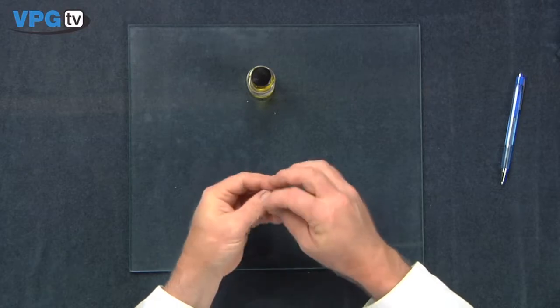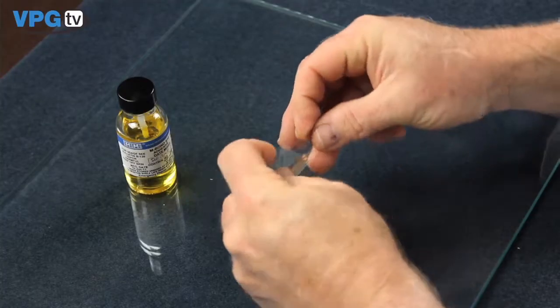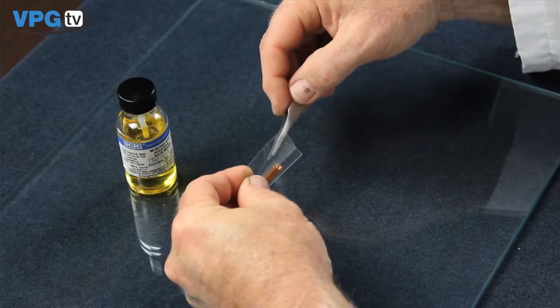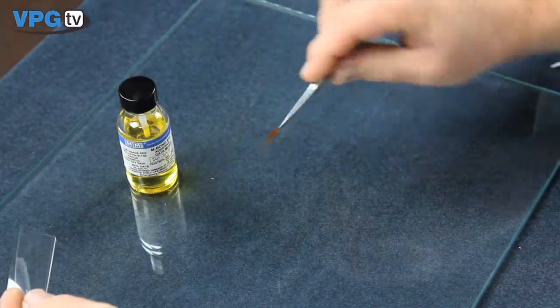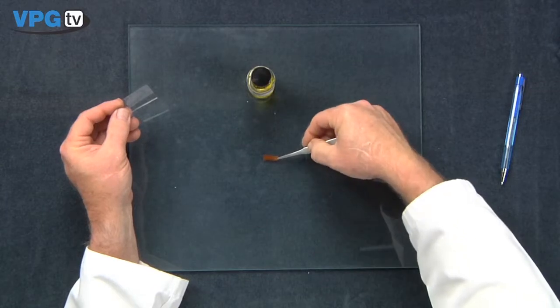Carefully remove the folder containing the WK gauge. Splay open the folder in butterfly fashion. Grasp the gauge carefully by the tab corner with the clean blunt nose tweezers. Do so without touching the grid area.